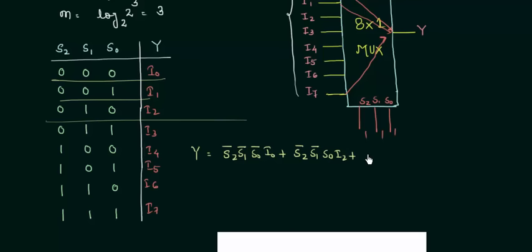For the third case, s2 complement, s1, s0 complement, i2. This is i1, sorry, this is i2. And for the fourth, s2 complement, s1, s0, i3.